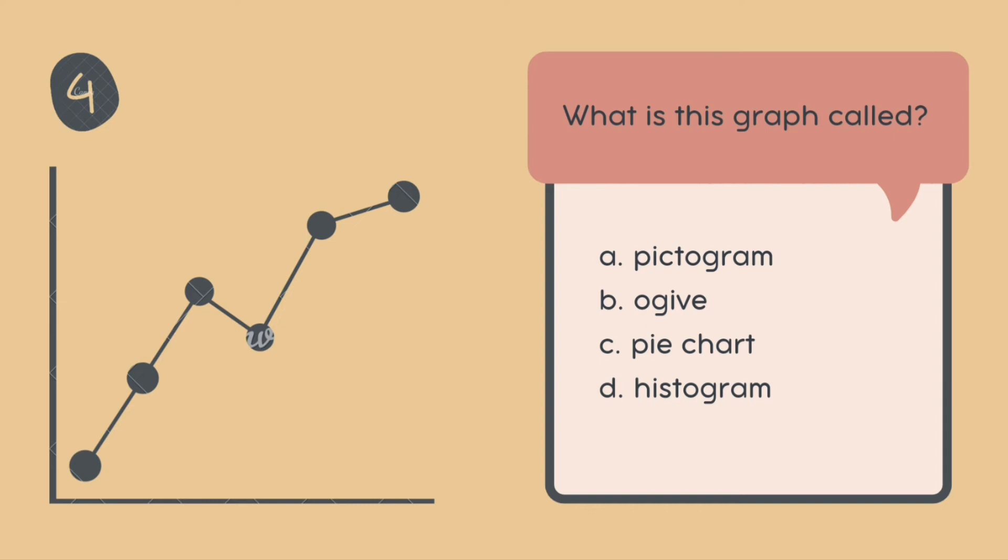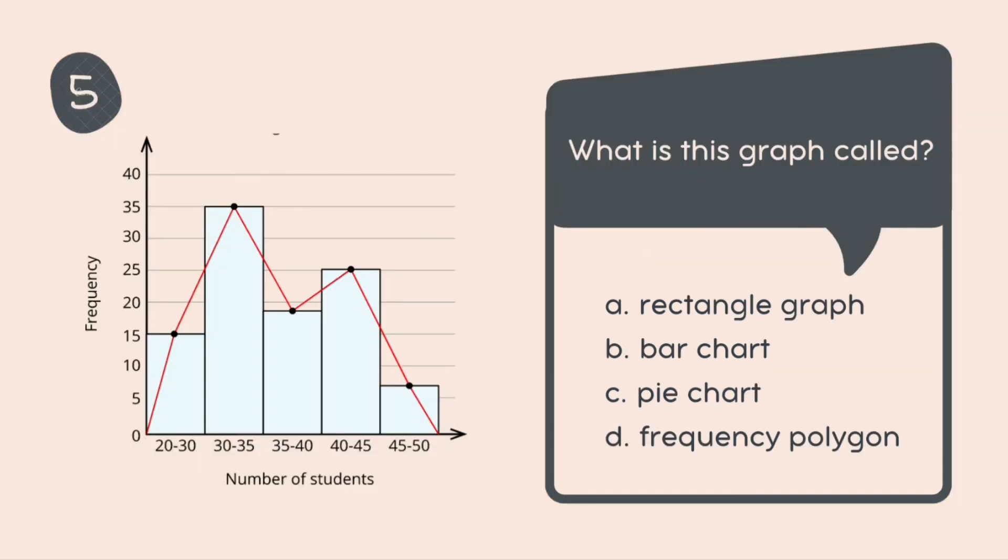Next question. What is this graph called? I can see that there are a lot of different sizes of rectangles and looks like at the midpoint we are marking the midpoint of each of those rectangles and we are connecting them through using a line. So what would this be? Is it a rectangle graph? Is it a bar chart? Is it a pie chart? Is it a frequency polygon? There are a lot of rectangles over here but there are a lot of connecting lines also from the midpoint. So what would this be called? Once you got the answer, write it down. And we are moving ahead with our next question.